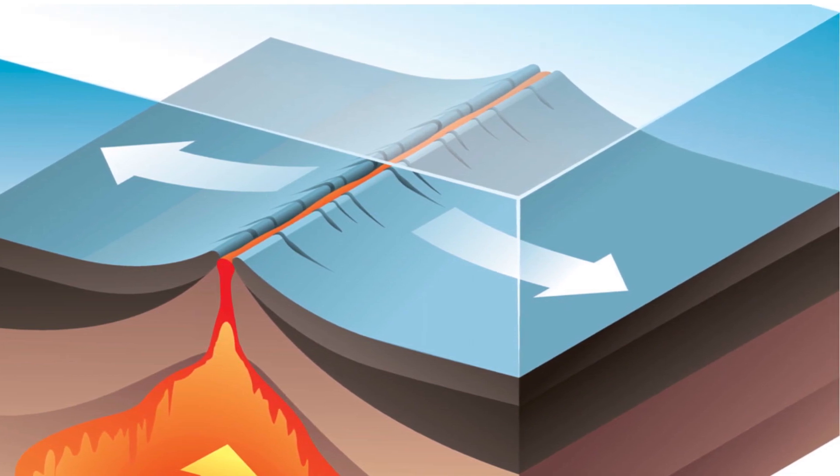The discovery of magnetic striping on the ocean floor supports the concept of seafloor spreading. As new crust forms at divergent boundaries, iron-rich minerals align with the Earth's magnetic field, leaving a record on the ocean floor.